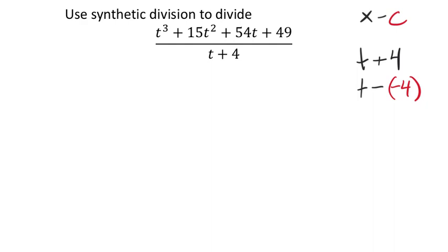So from that, then, I can start setting up my synthetic division. I've got my box. And then we've got the line that we're going to use for operating, right? So I'm subtracting negative 4. That means that negative 4 goes in the box.